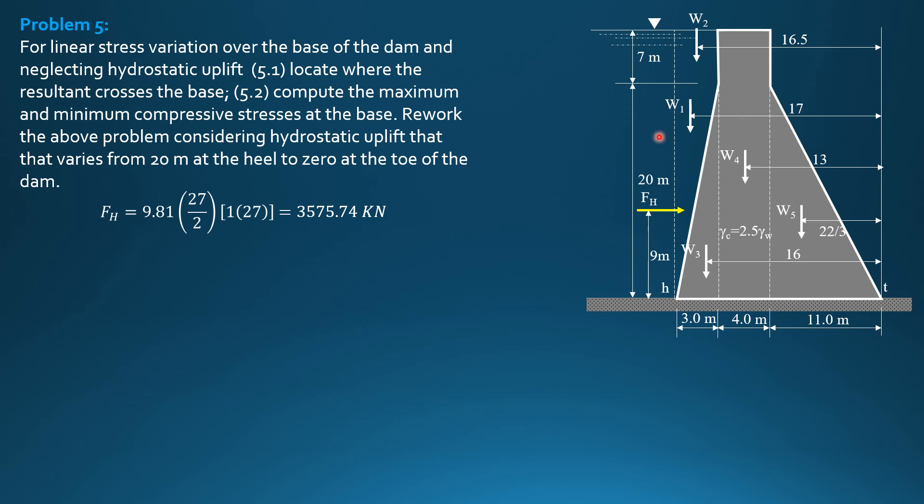Then weight of water, this is triangular. W1 is 9.81 times 1 half or 0.5 of 3 times 20 times 1, so it is equal to 294.3 kilonewtons. Weight sub 2 is 9.81 times volume, which is 3 times 7 times 1, so it is 206.01 kilonewtons.